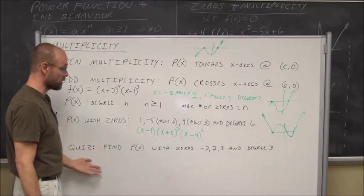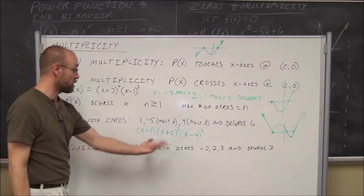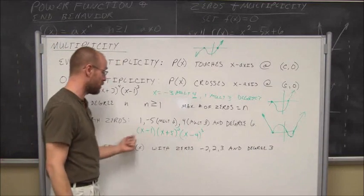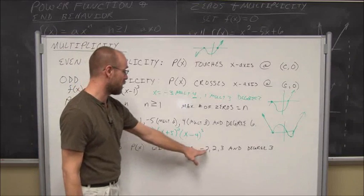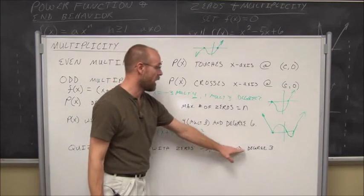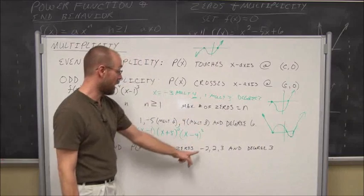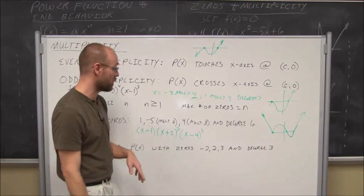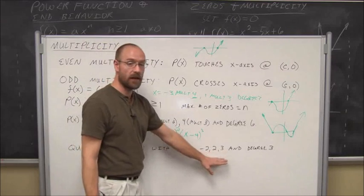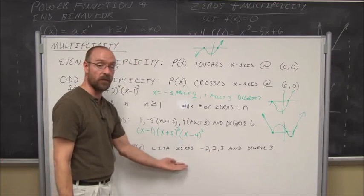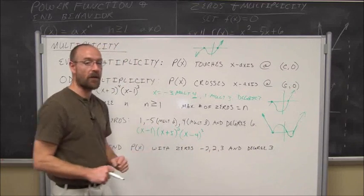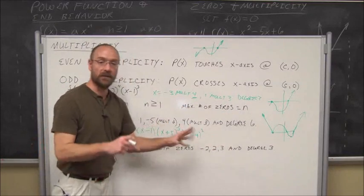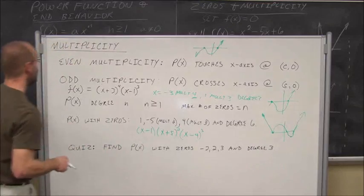Here's your quiz: find the polynomial written as linear factors with zeros of negative 2, 2, and 3, and degree 3. Three zeros and degree 3 tells you something about their multiplicity. Once you've written the polynomial, sketch a graph — it's only third degree, so it isn't too bad.